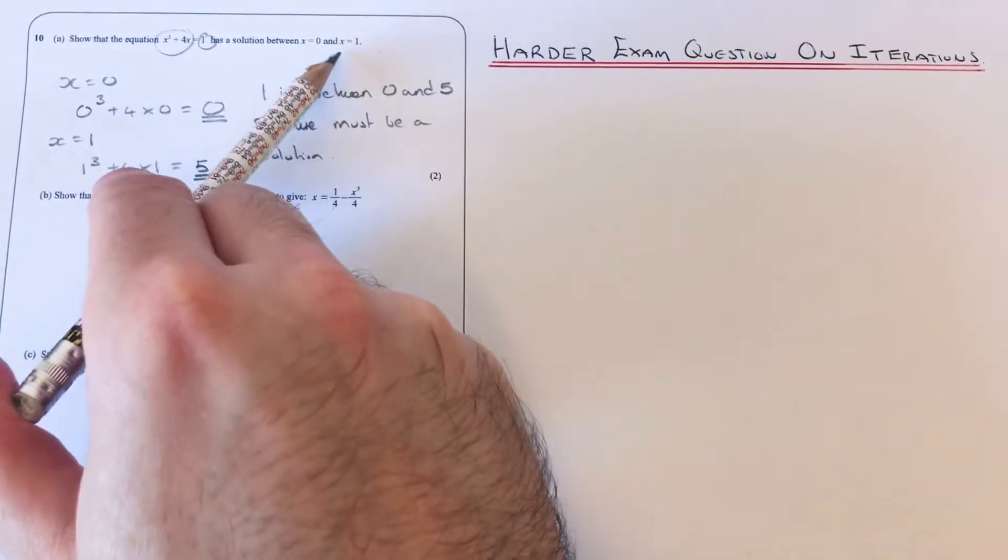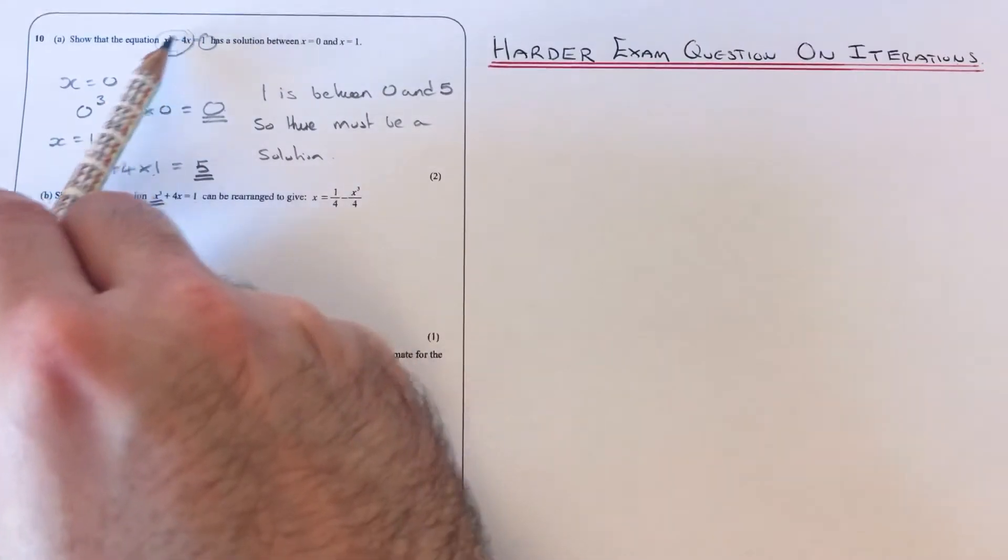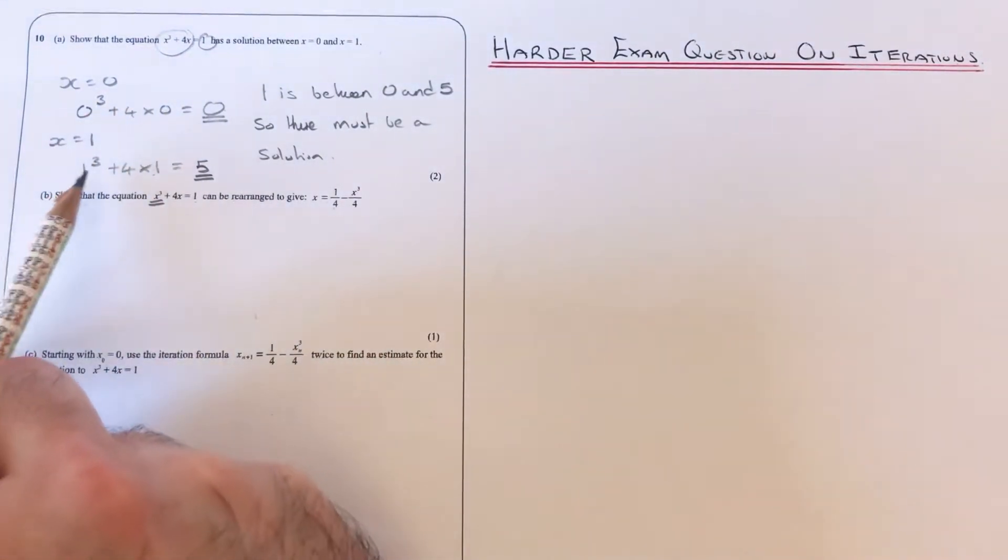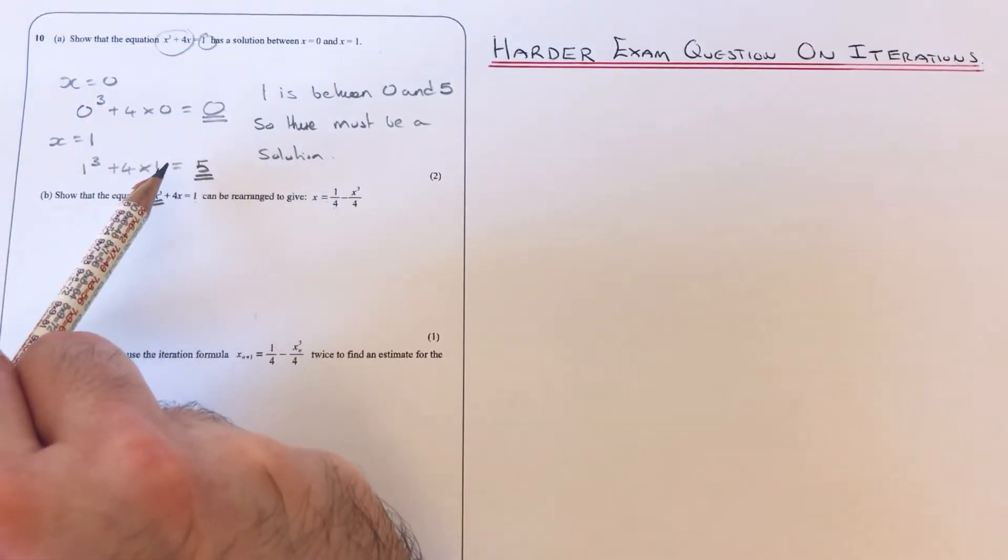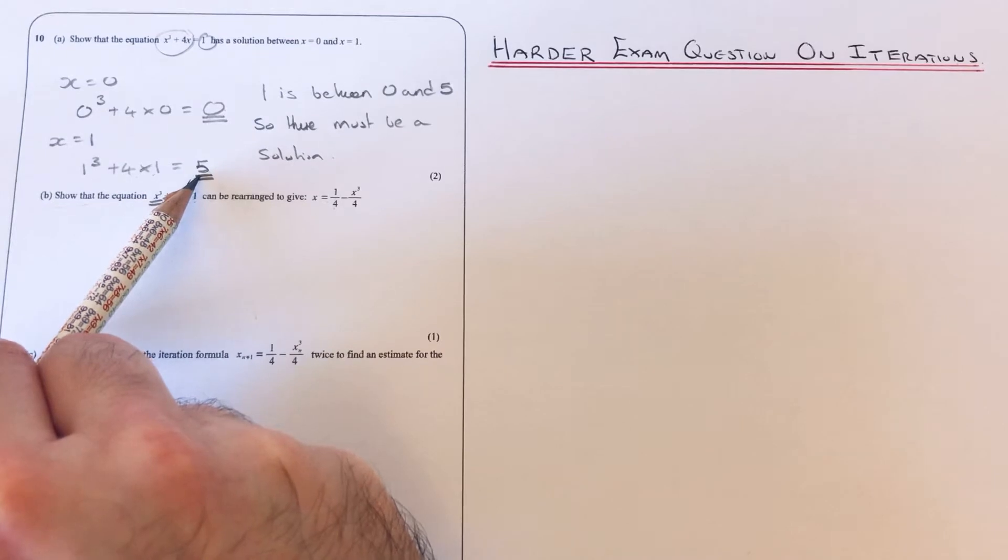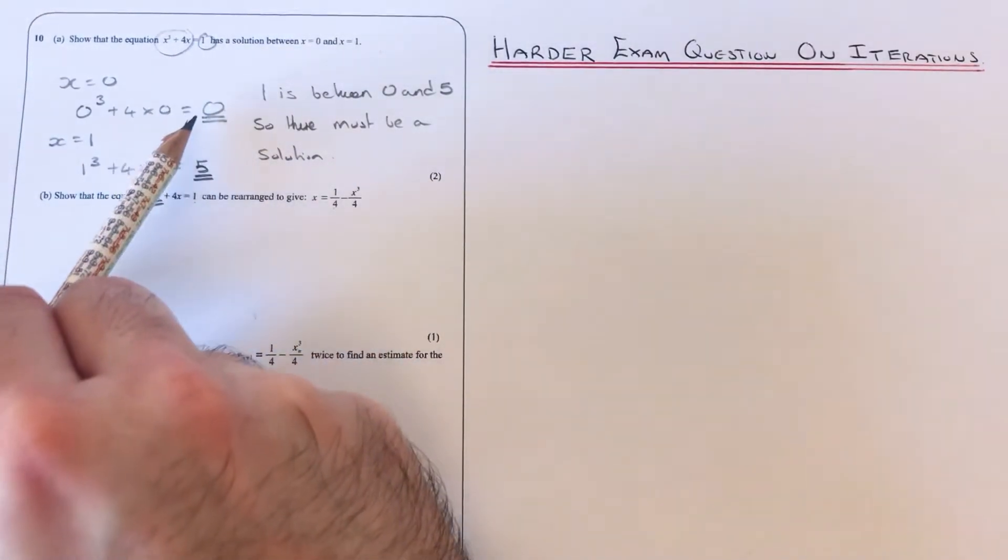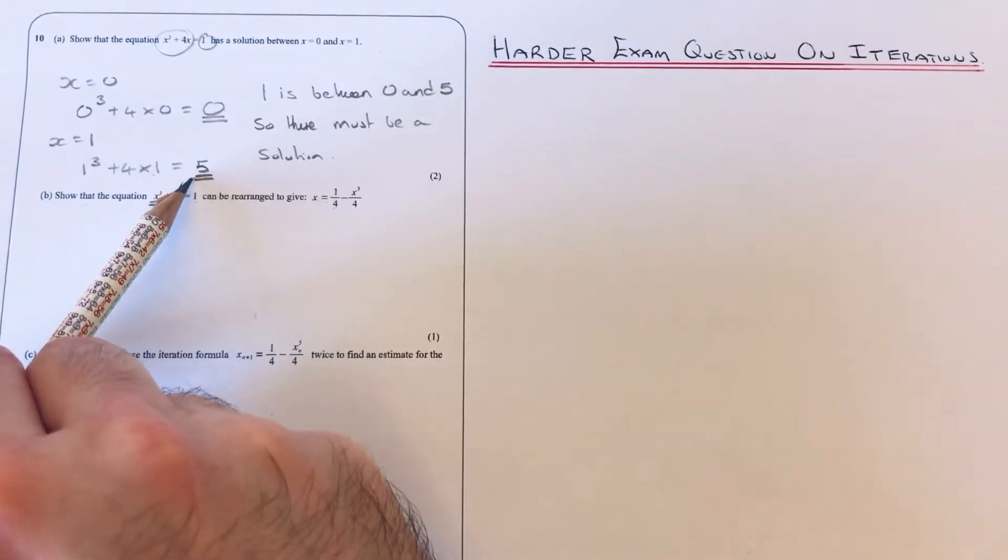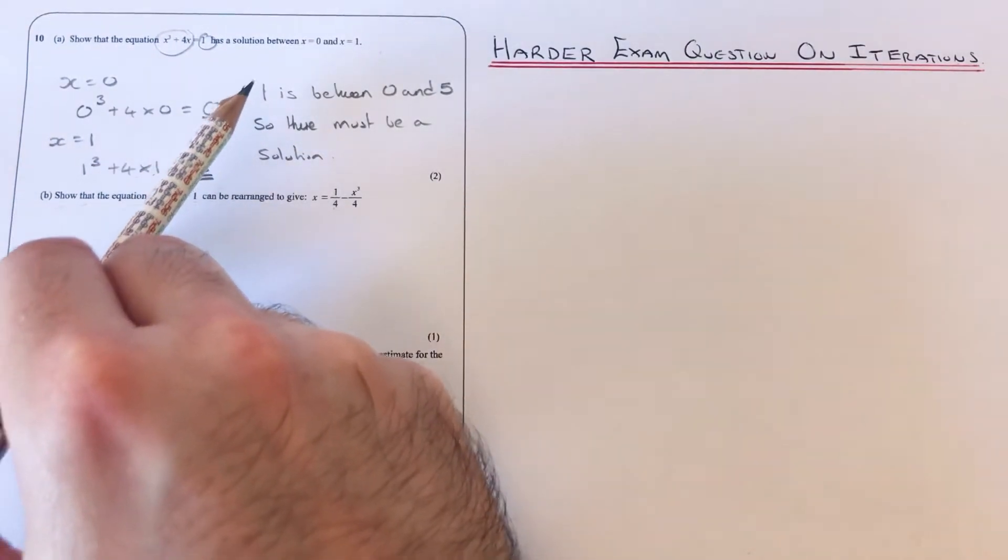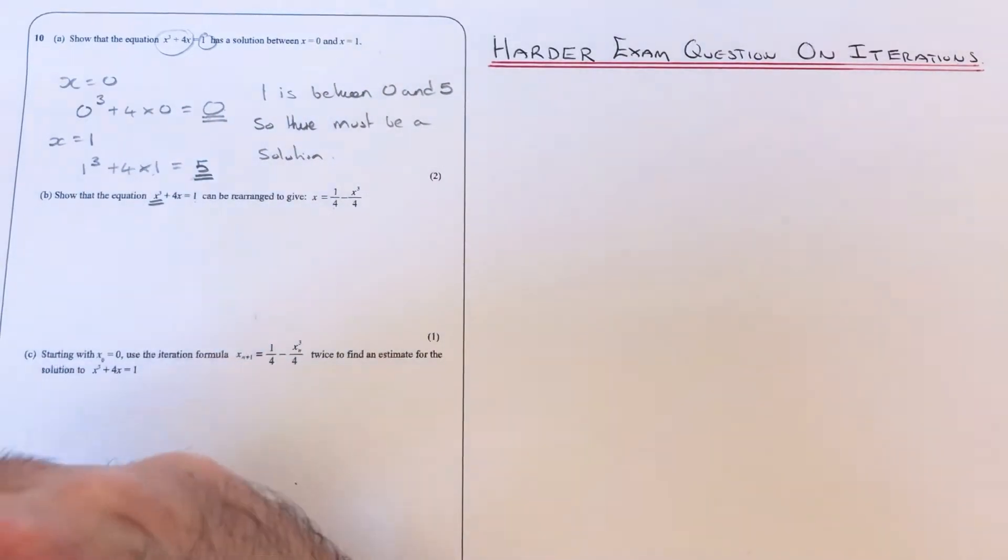And then I also substituted x = 1 into the left-hand side, so I did 1³ + 4 × 1 = 5. And then I made a little comment: since 1 is between 0 and 5, there must be a solution between x = 0 and x = 1.